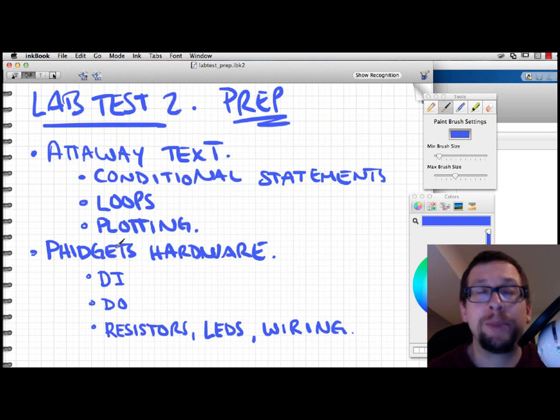As well, please do review how the Fidgets hardware works and how the object-oriented code that is used with it for digital input, digital output works, as well as how to interface or connect or design circuits for the Fidgets hardware that includes resistors, LEDs, and basic wiring. So these are all good things to review ahead of time before the lab test. So this will be the second lab test, it's important to review that.